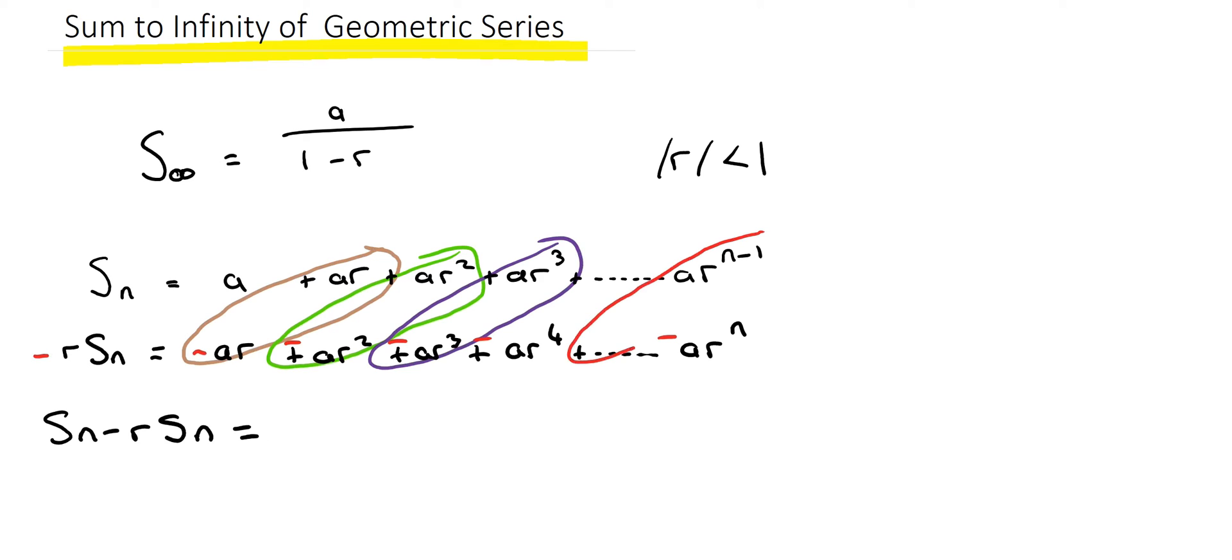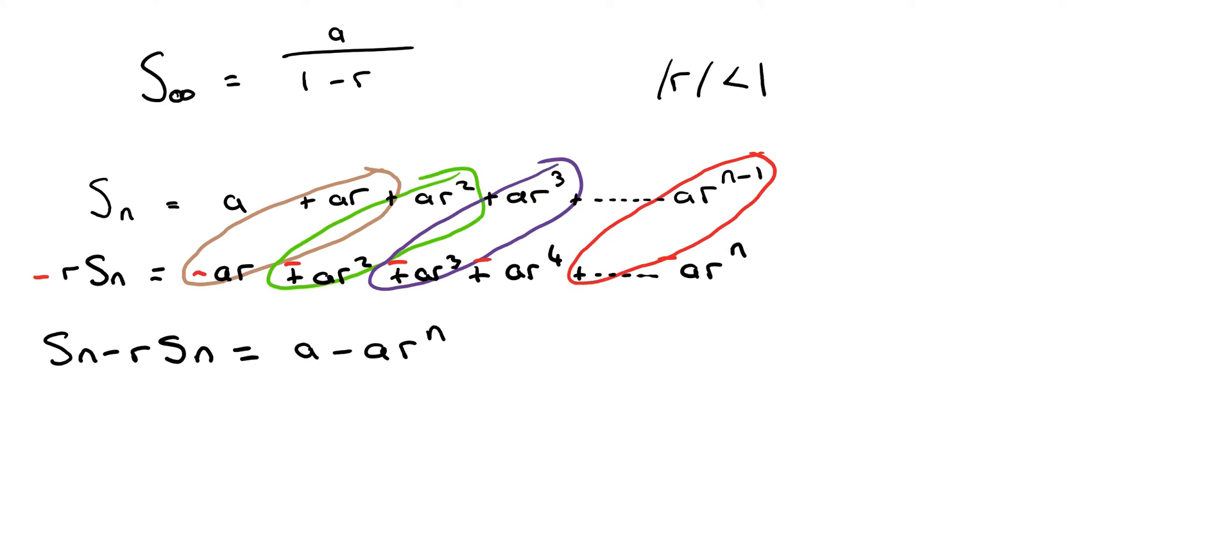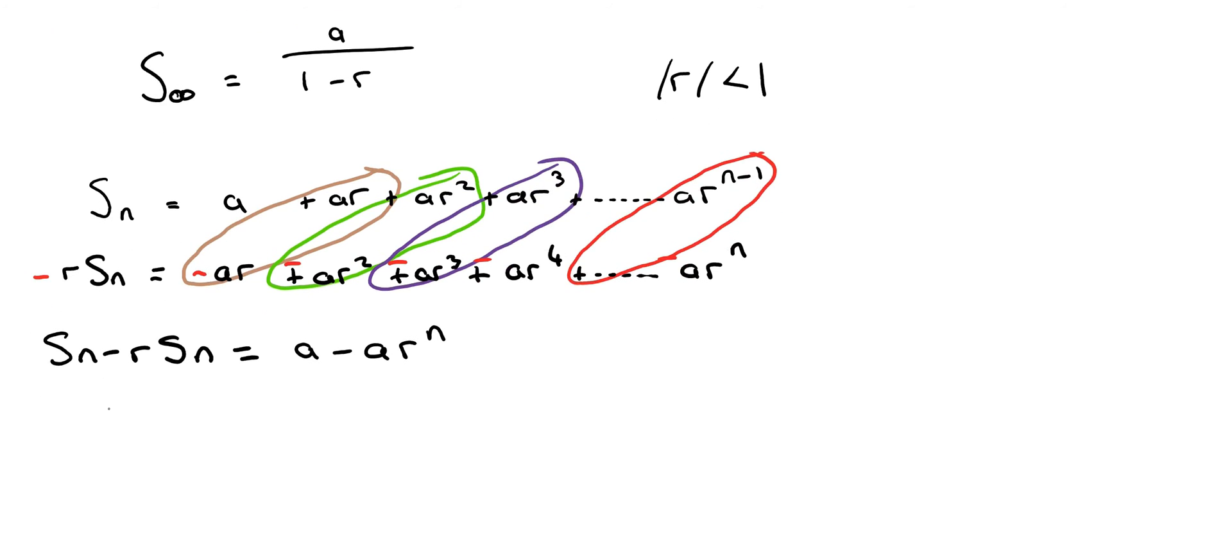This will cancel in there, so all you're going to be left with is a minus ar to the power of n. Next step is on the left hand side to factorize out Sn. Sn times one minus r. And on the right hand side we can factorize out a. This should start to look familiar.